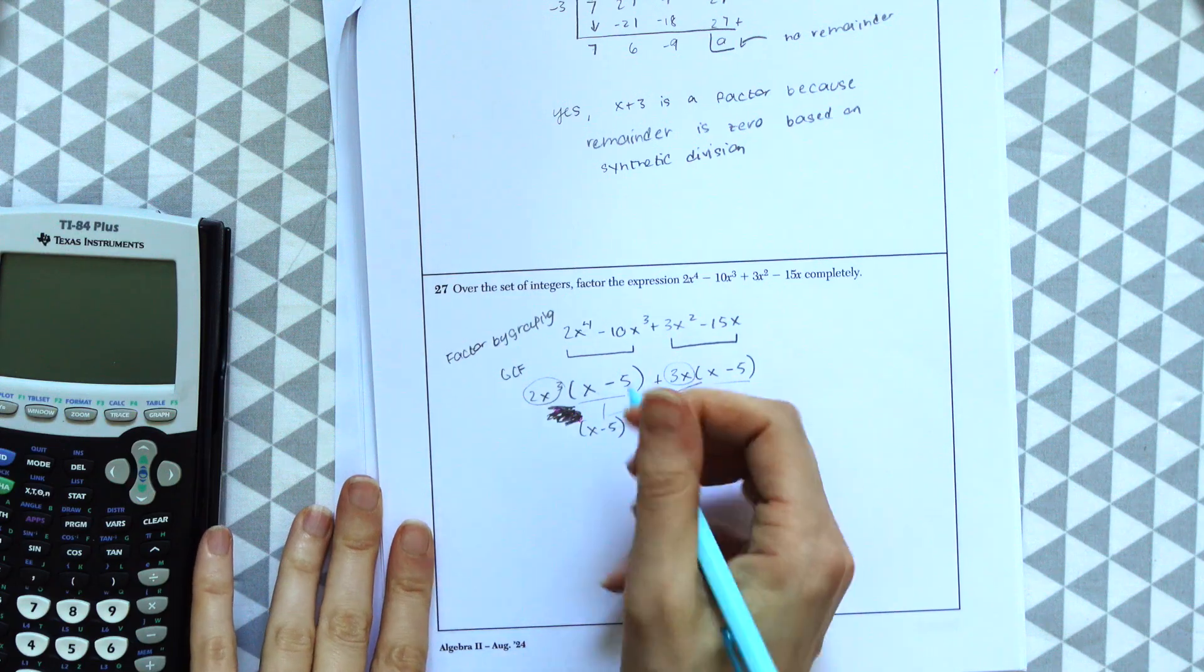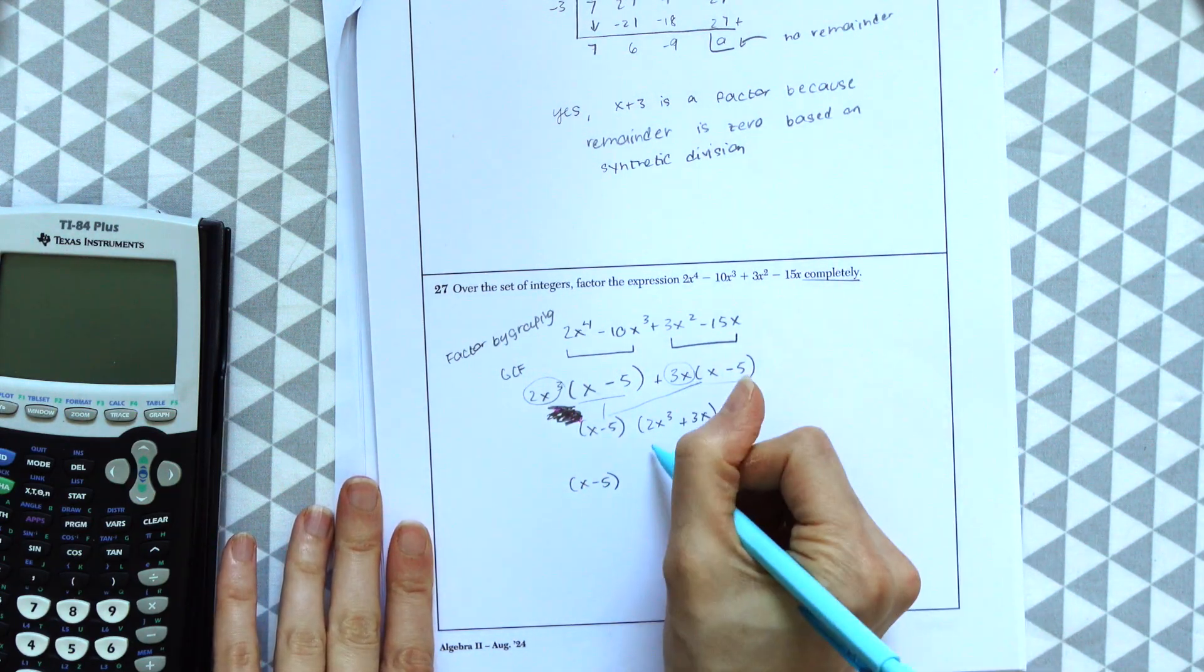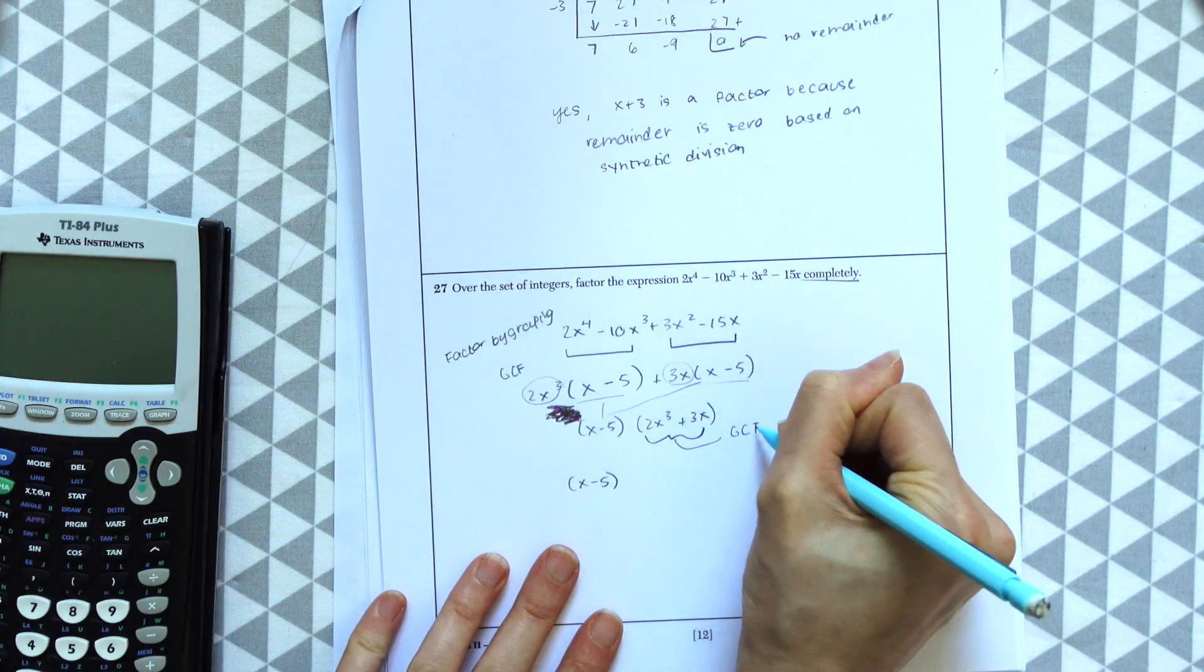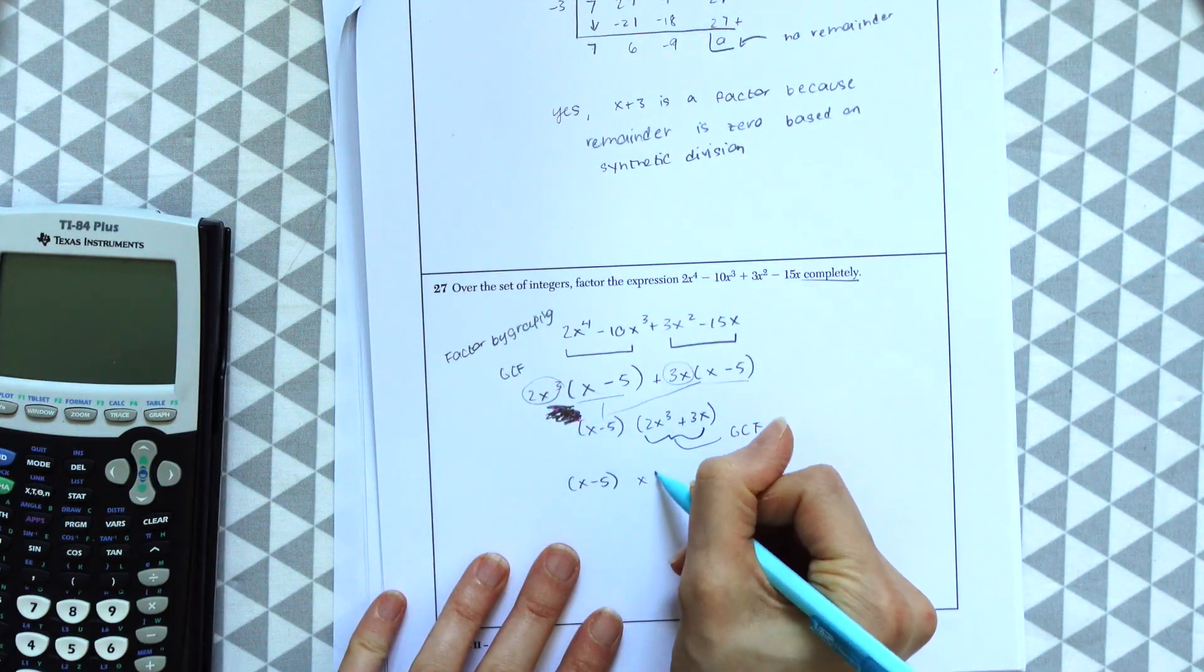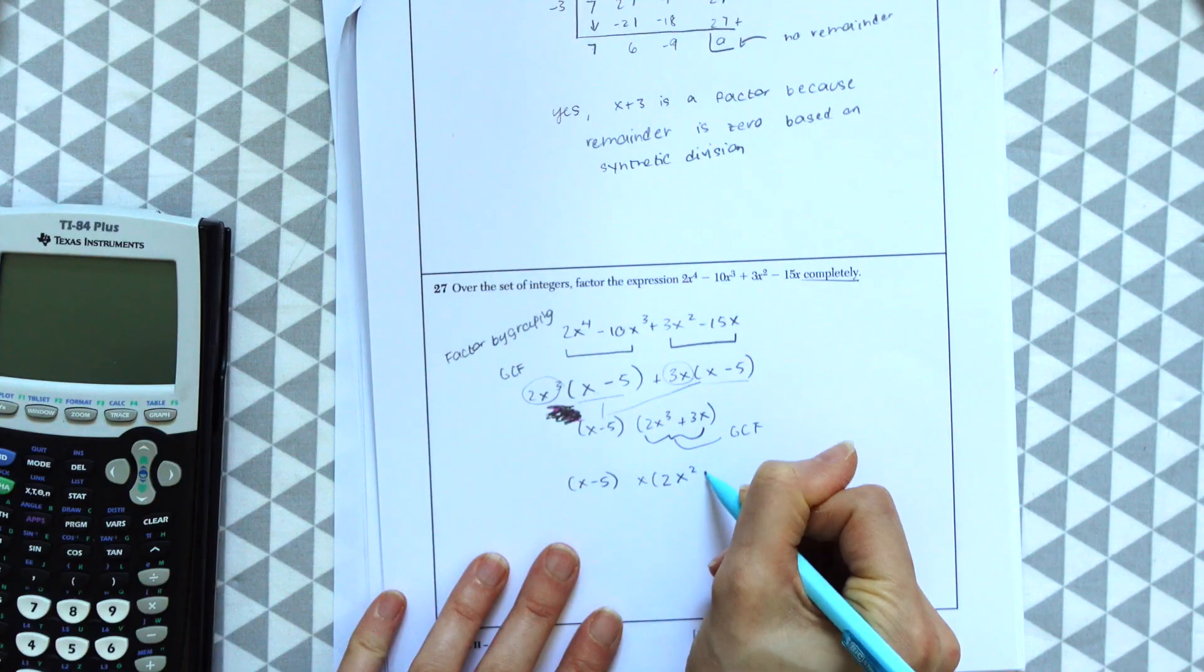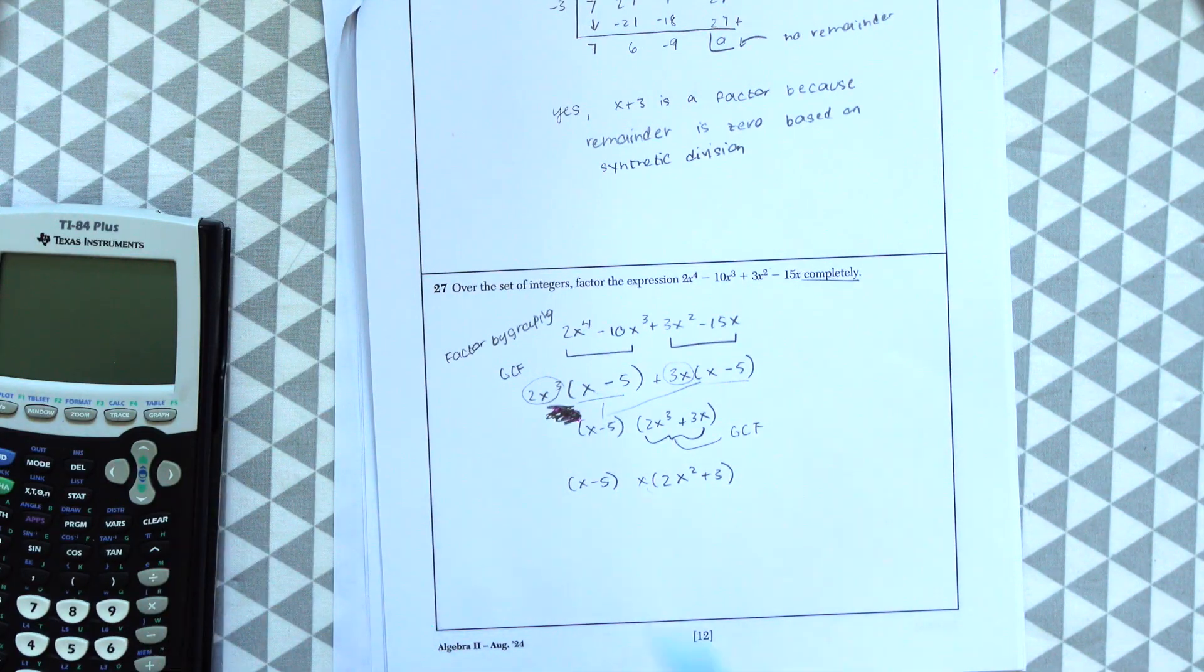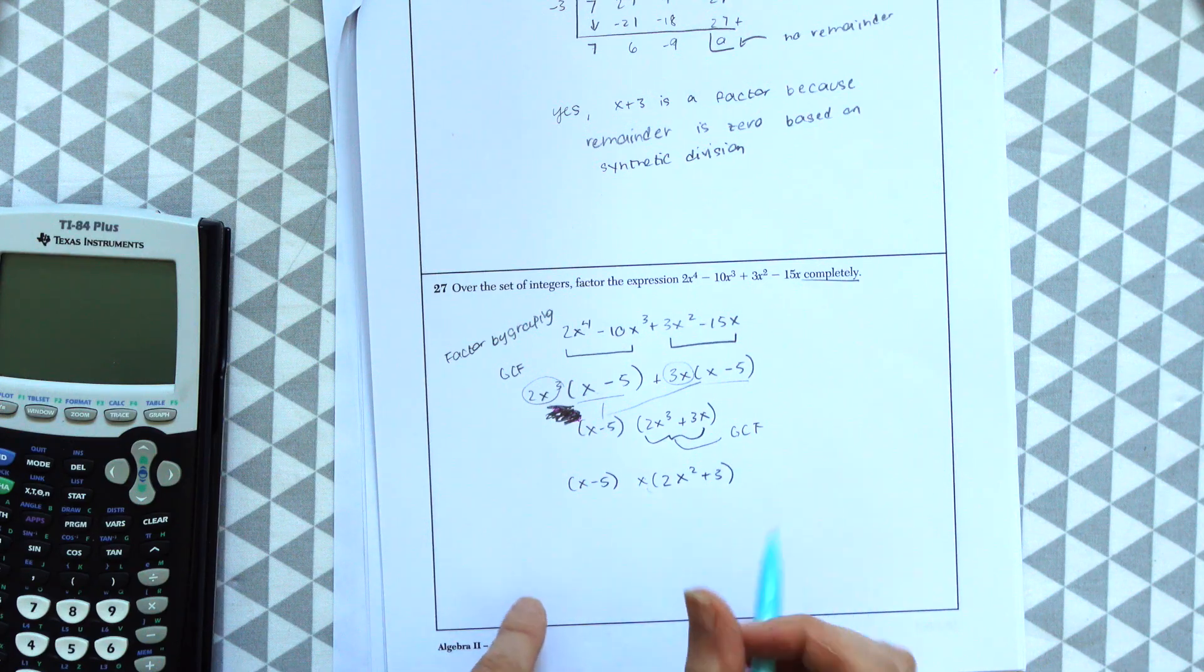The last thing we can do, there's one more thing because it said to factor completely. Notice another GCF could be taken out. We can take out an x here. We have x times 2x squared plus 3. So if you distributed this, this would end up the same. And that's how you know you factored correctly. But this is our answer: x minus 5 times x times 2x squared plus 3.